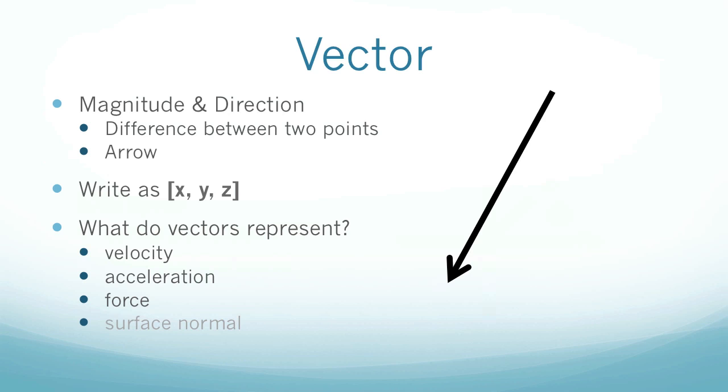However, there is a difference. You can visualize this x, y, z as an arrow. The origin of the arrow is at the origin of the world, so 0, 0, 0. And then this x, y, z indicates the tip of the arrow. You can see that as a point. Then you can visualize this arrow that has a magnitude, because that's the length of the arrow, and a direction, because the arrow is pointing somewhere.